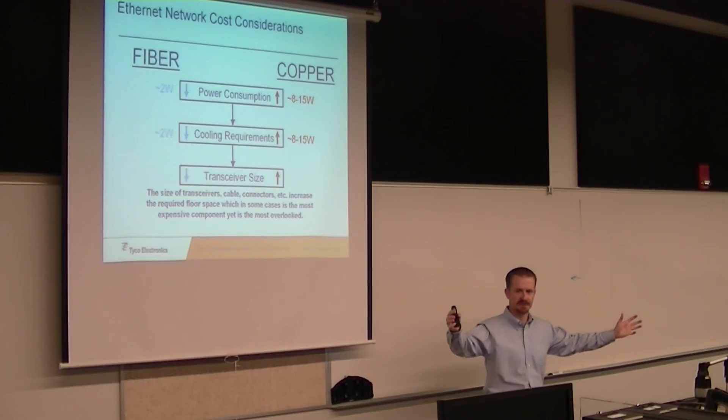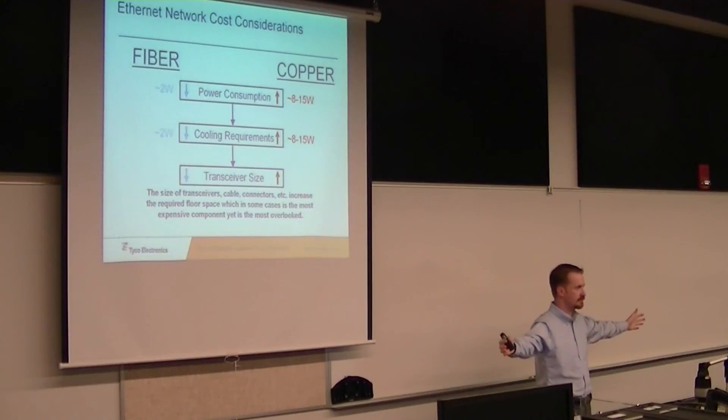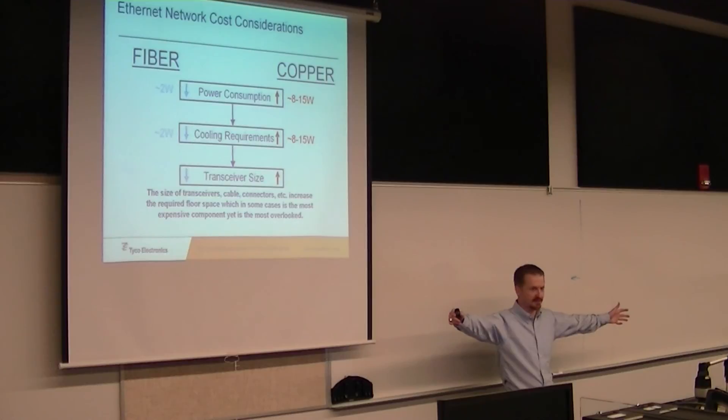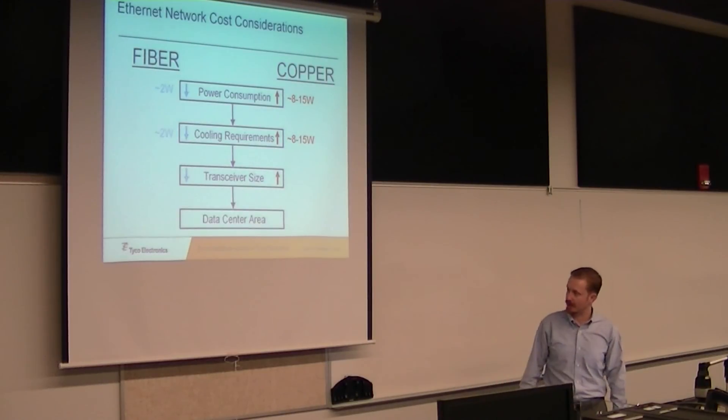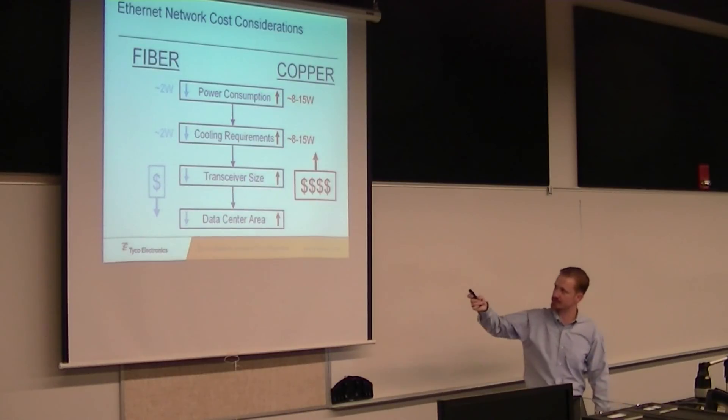People always get hung up on the cost of the electronics and they often forget about this floor space issue. If you were building a small data center and you wanted to build it in copper and it was going to be in this room, it would take up the whole room. But if I build it out of fiber, I could probably put it over in this corner and do the exact same thing. If you're paying a couple thousand dollars a square foot for floor space, that's a huge saving. You don't have to pay for all this floor space. Again, reduce your data center area, which makes the copper much more expensive than fiber when you build the whole thing.